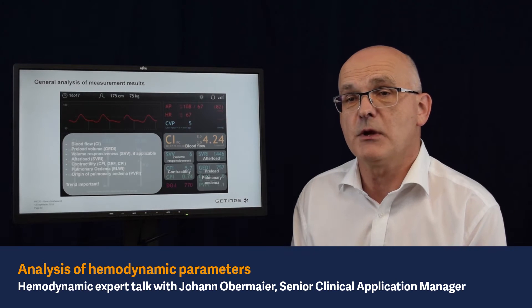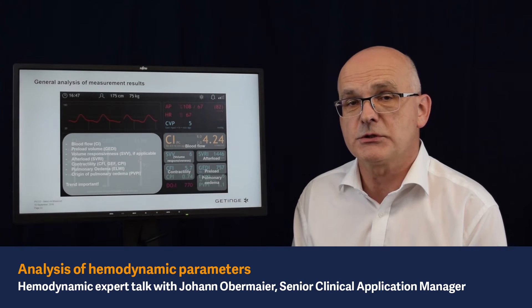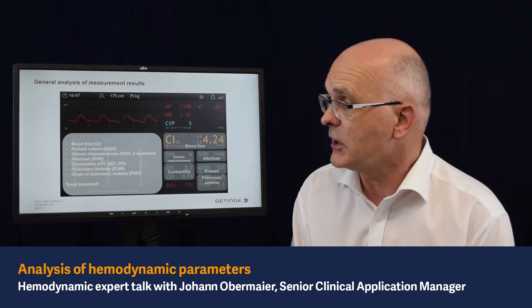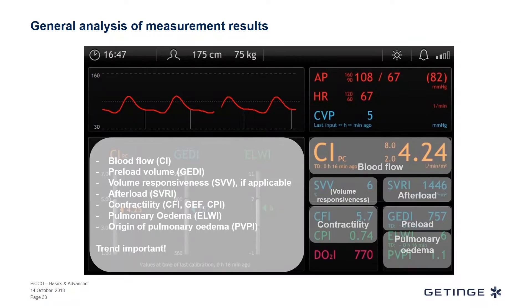In summary, we have a broad range of information — the complete picture on the hemodynamic situation of the patient. We have information on blood flow, determinants of blood flow, the preload status, possibly volume responsiveness, information on the afterload, contractility, and all the information on lung status.